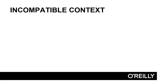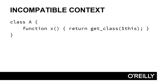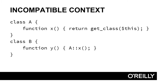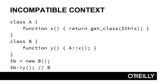This next feature regards static calls to $this in an incompatible context. It's slightly esoteric, so it's best illustrated by some code. If you define a class called A with a method called X that returns the name of the class, then create another class called B with a method called Y that makes a static call to A's X method — in PHP 5, invoking B's Y method returns B, even though $this should refer to A. Allowing this was done for compatibility with PHP 4, but it's no longer possible in PHP 7.